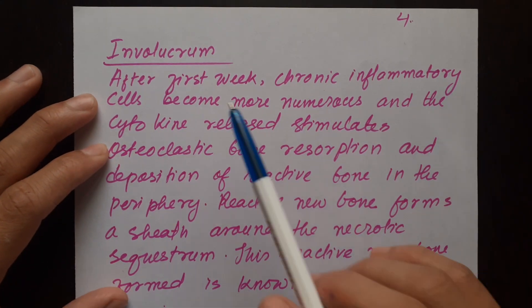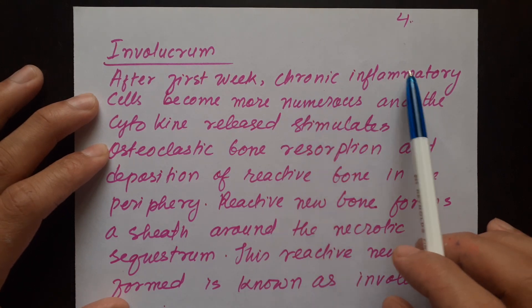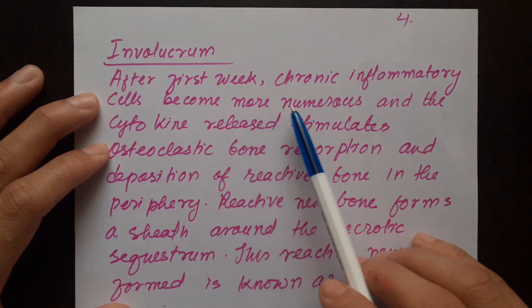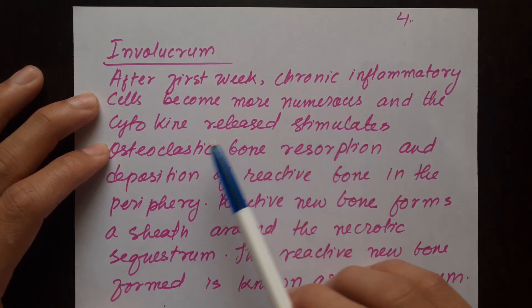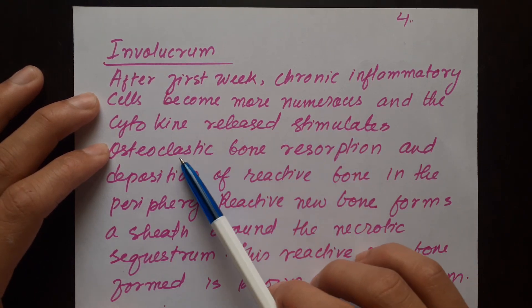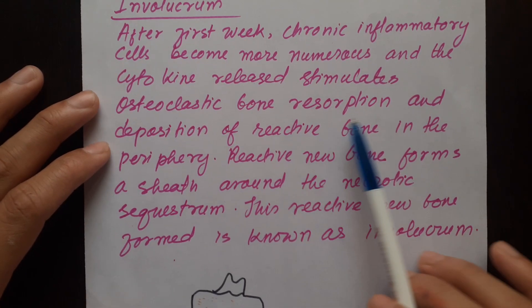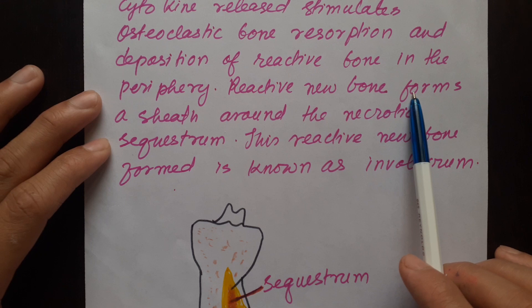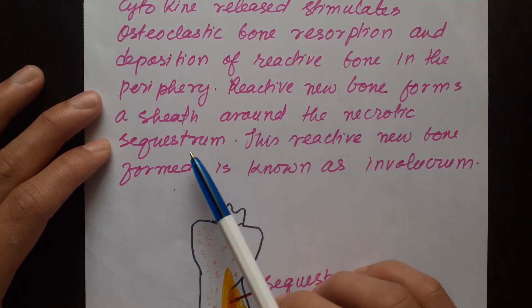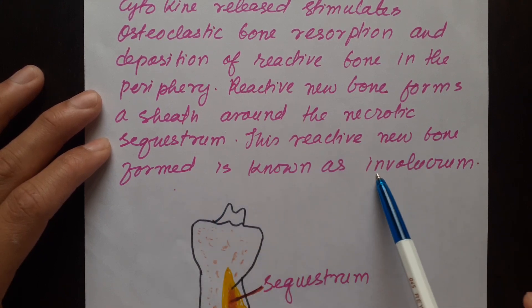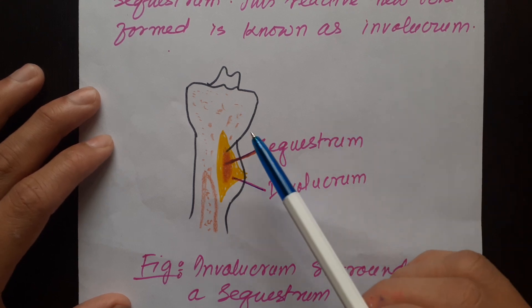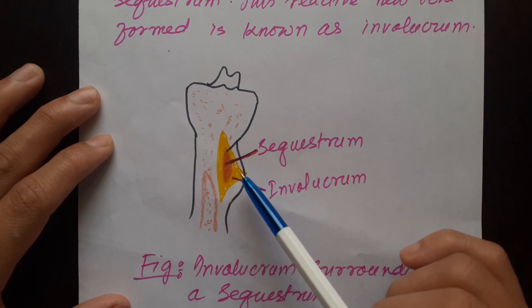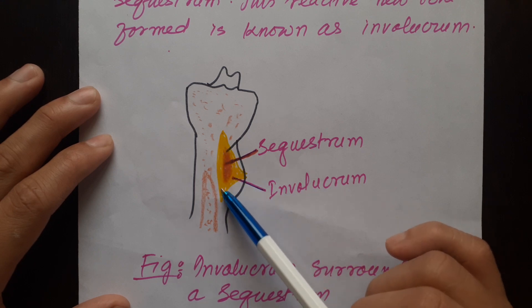Now let's see involucrum in detail. After the first week, chronic inflammatory cells become more numerous. Cytokine release stimulates osteoclastic bone resorption first, and then later causes deposition of reactive bone in the periphery. This reactive new bone forms a sheet around the necrotic sequestrum and is known as involucrum. In the diagram, the sequestrum is the dead piece of bone, and the involucrum is the reactive new bone which covers it.